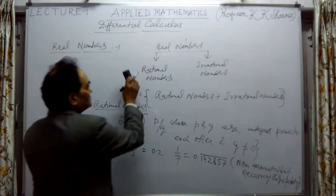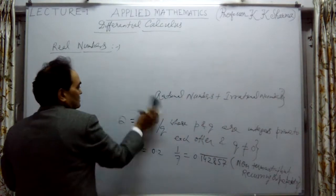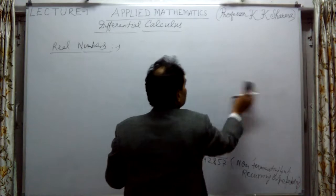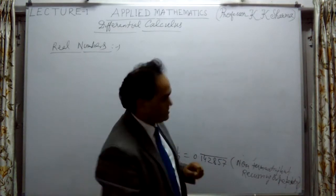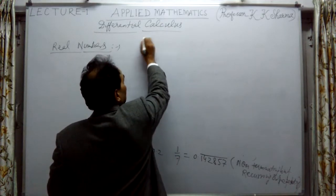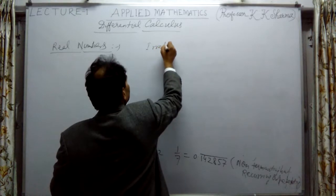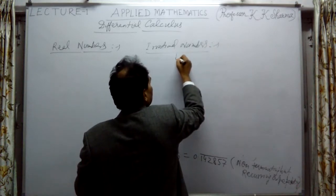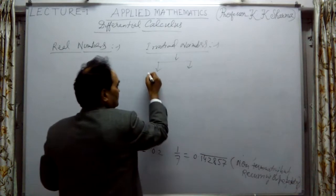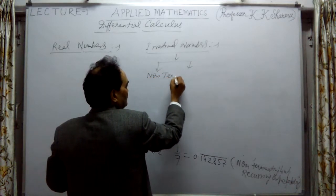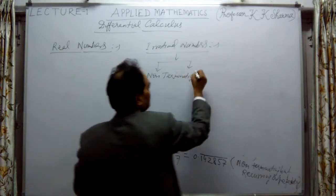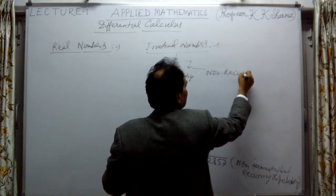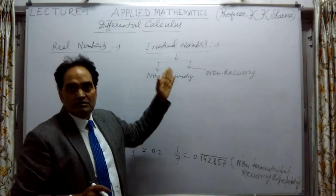What are the irrational numbers? Irrational numbers are non-terminating if they are expressed in terms of decimals, but they are non-recurring as well. Irrational numbers have two properties: first, they are non-terminating, and second, they are non-recurring.